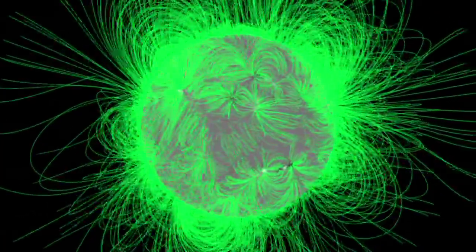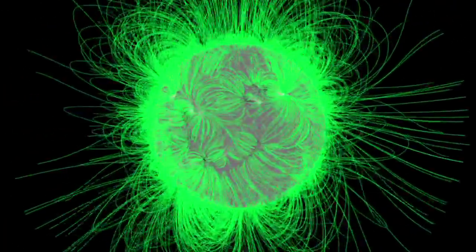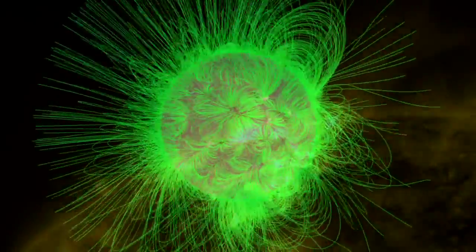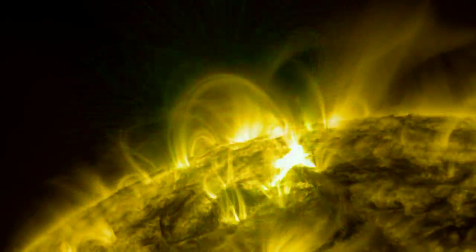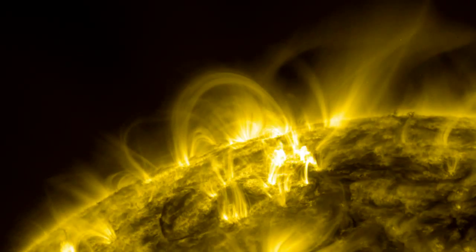While we cannot see magnetic field lines, NASA's SDO can observe solar particles that move along them, tracing out giant arcades of magnetic loops on the Sun's surface.